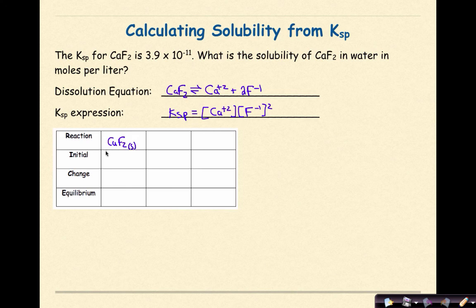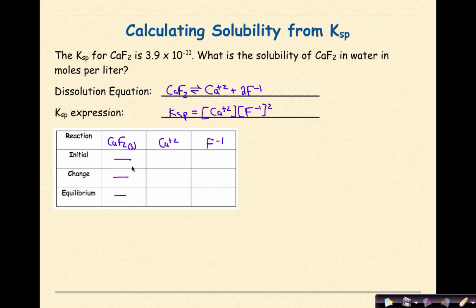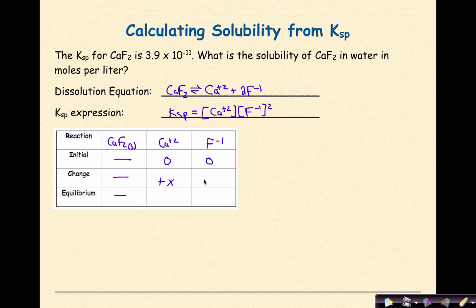Setting up the RICE table: CaF2 is a solid, so no values appear in its column. Initially, we assume no Ca²⁺ or F⁻ ions are present — all ions are fixed in the solid. The change row shows the system gains x for Ca²⁺ and 2x for F⁻, since the dissolution equation has a coefficient of 2 in front of F⁻.